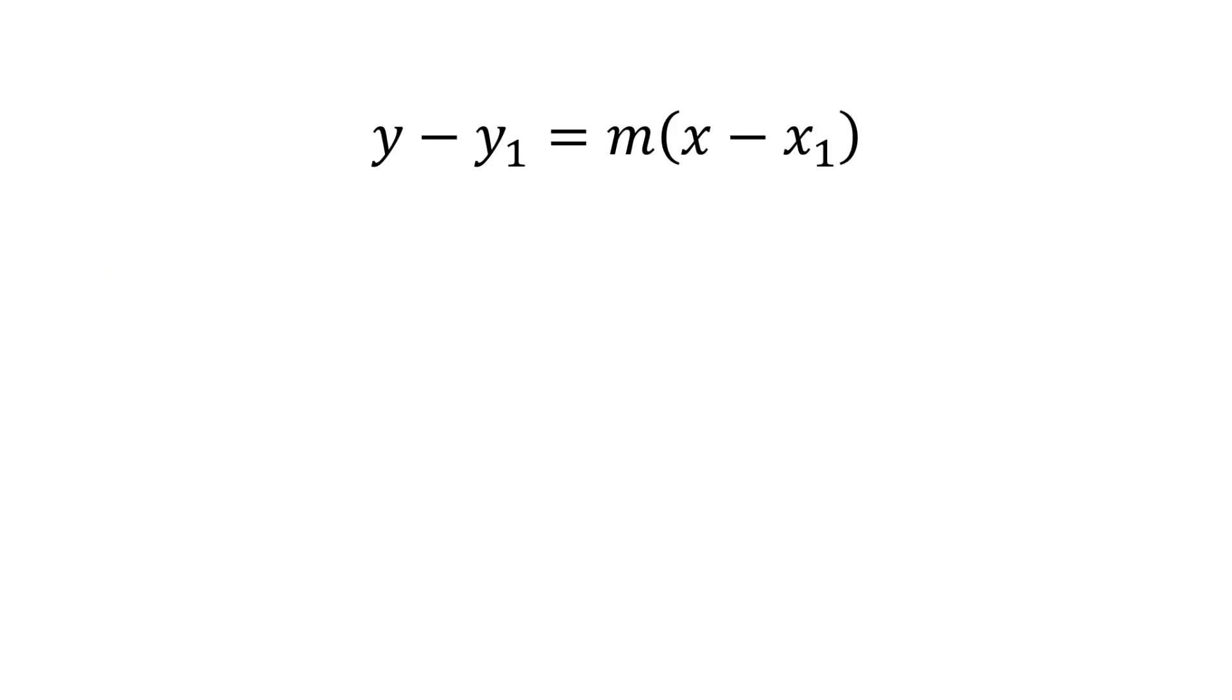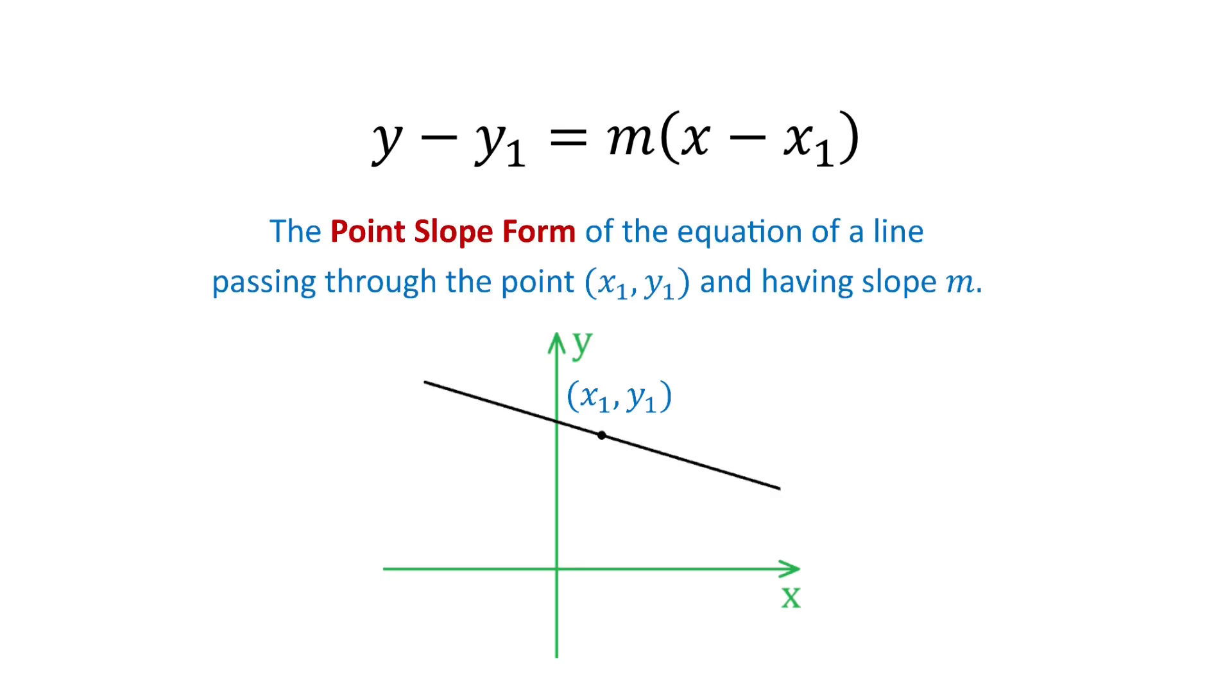Next, y minus y1 equals m times x minus x1. This is the point-slope form of the equation of a line passing through the point x1, y1 and having the slope m.